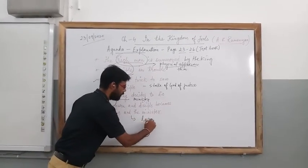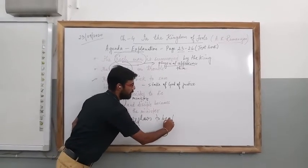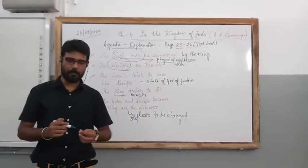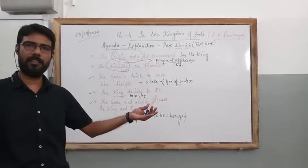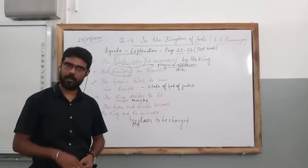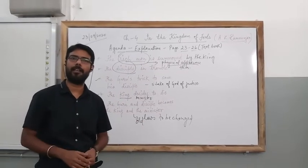...that the old laws should be changed. So the guru and the disciple become the king and minister, the laws change there, and their kingdom now becomes a good, authentic, and proper kingdom. It is no longer a kingdom of fools.